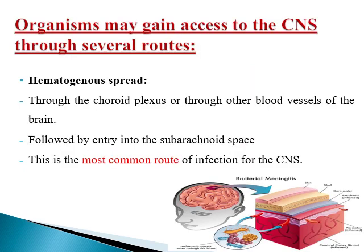How can organisms gain access to the CNS? This occurs through several routes, but the most common and the most important is through blood, in what we call hematogenous spread. This occurs through the choroid plexus or through other blood vessels of the brain, and it is followed by entry of the organism into the subarachnoid space. As demonstrated in this photo, this organism can reach the CNS through the blood vessels.